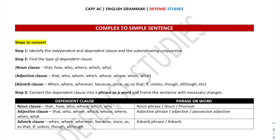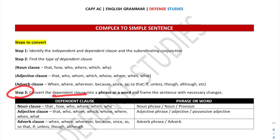The third step is to convert the dependent clause into a phrase or a word and frame the sentence with necessary changes. You can make certain changes as required, but the meaning of the sentence should not change — it should convey the same meaning as the original complex sentence.